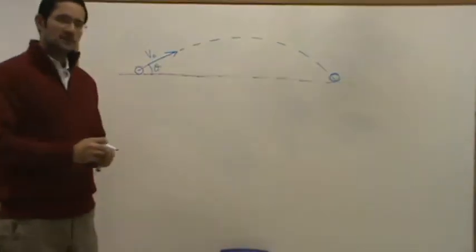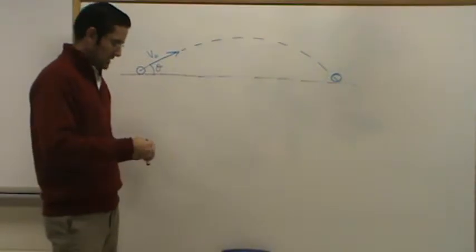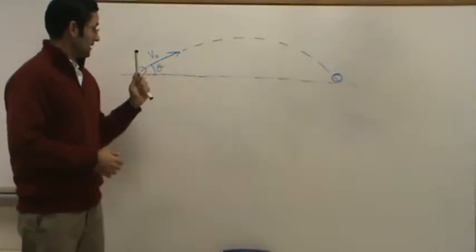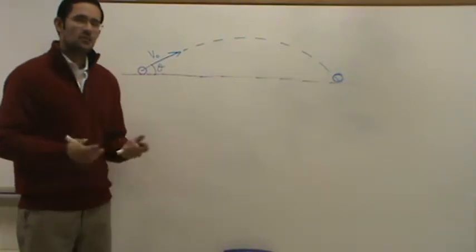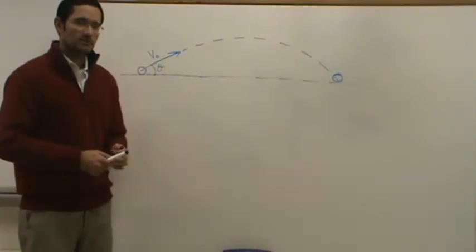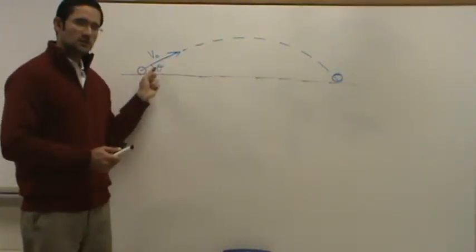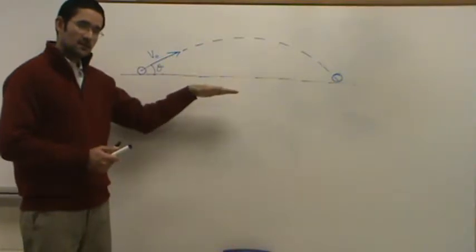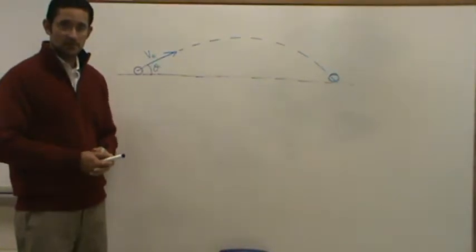Whenever you get a problem like this, the first thing you should always do is break down the initial velocity into its x and y components. Because the ball is doing two things when it's being kicked at an angle theta: it's moving sideways, so it has a horizontal velocity, and it's moving up, so it has a vertical velocity.